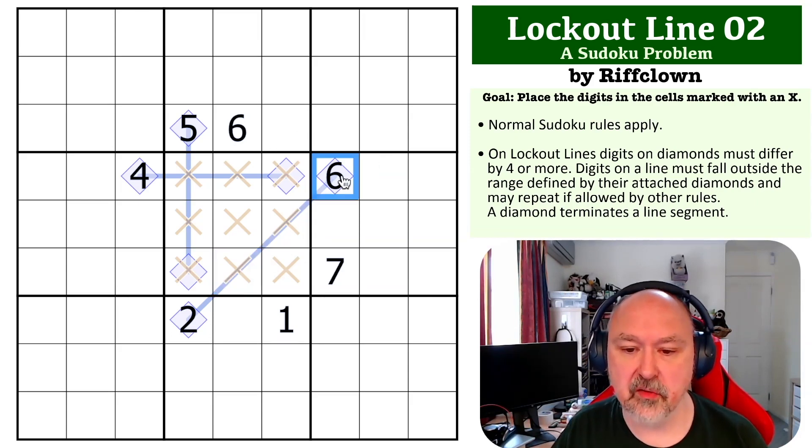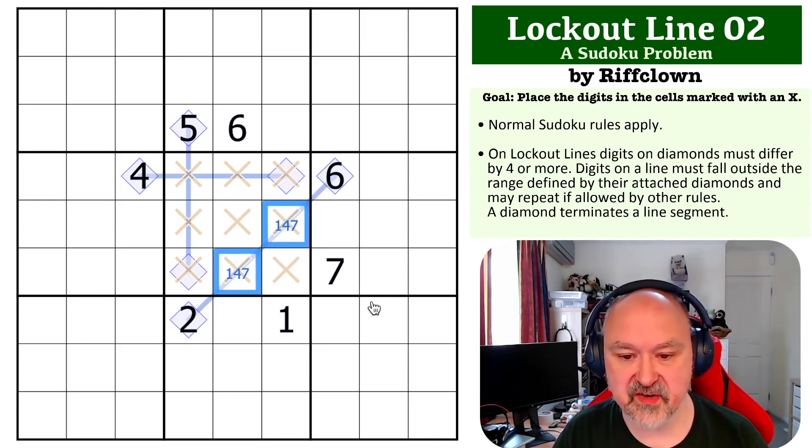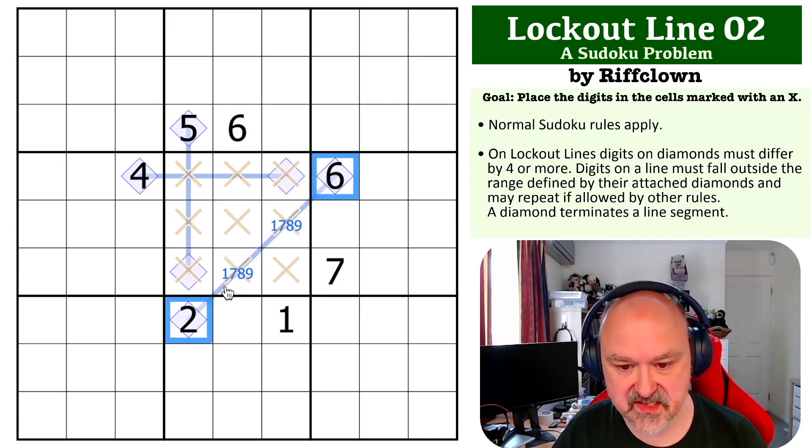If you've got a lockout line which has two and six as the bounds, then the only digits you can put on the lockout line are one, seven, eight, and nine, because they're the only digits that fall outside of two and six.